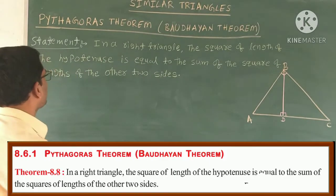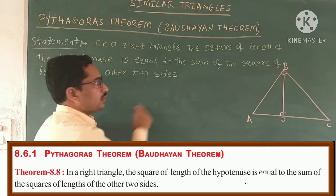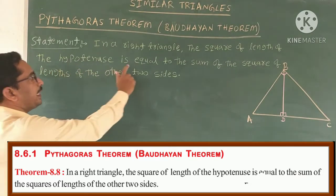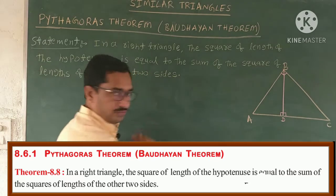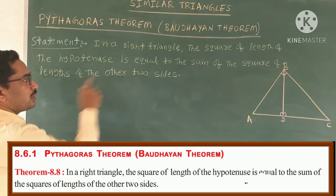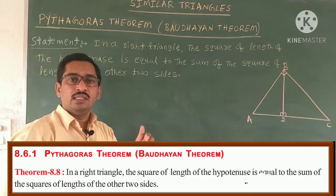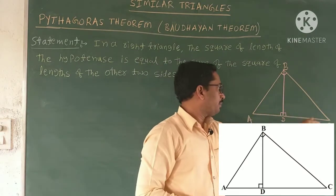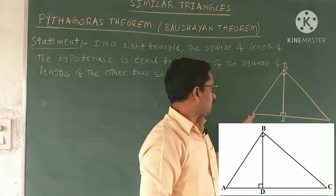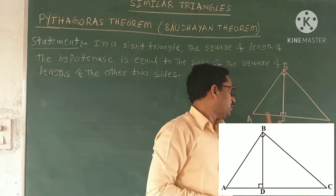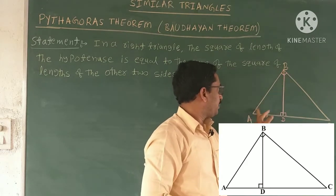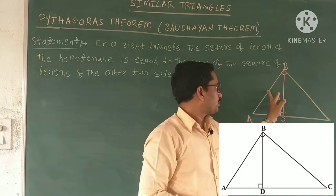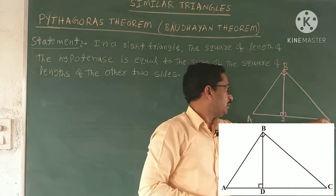See the statement of the Pythagoras theorem. In a right angle triangle, the square of the length of the hypotenuse is equal to the sum of the squares of the lengths of the other two sides. Here I am selecting triangle ABC where angle B is 90 degrees. The longest side AC is the hypotenuse, and the remaining two sides are AB and BC. So we have to prove AC² = AB² + BC².